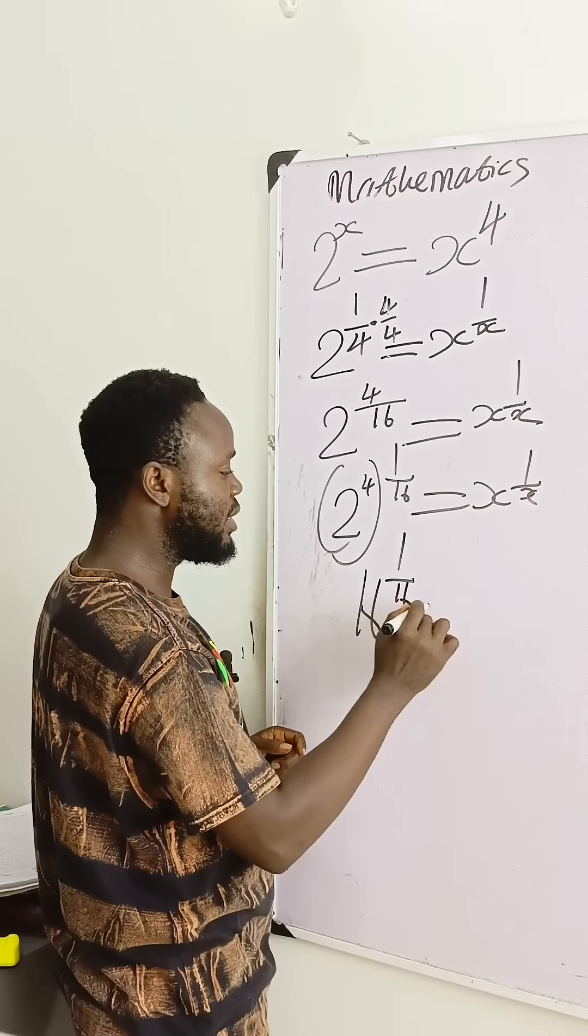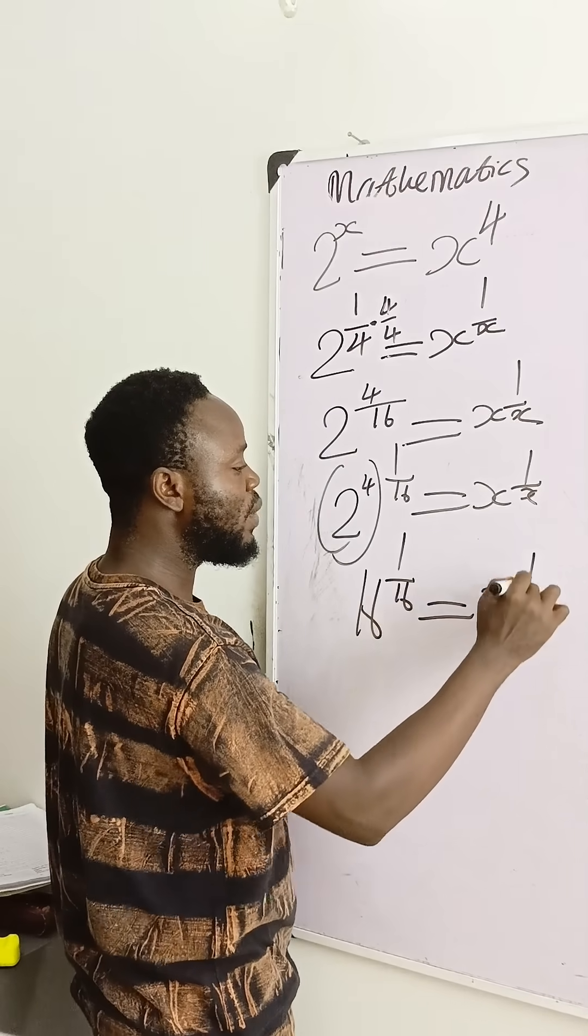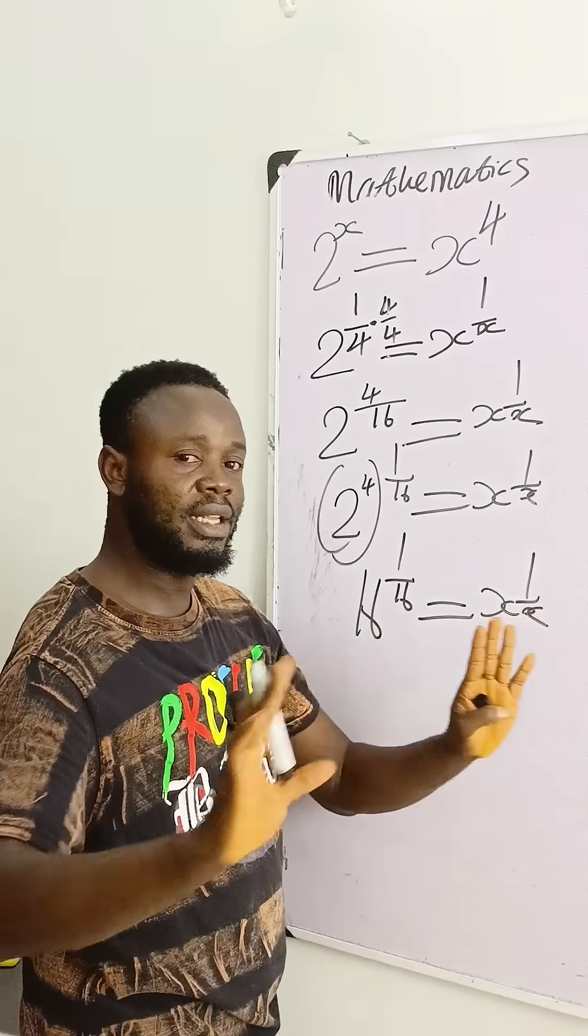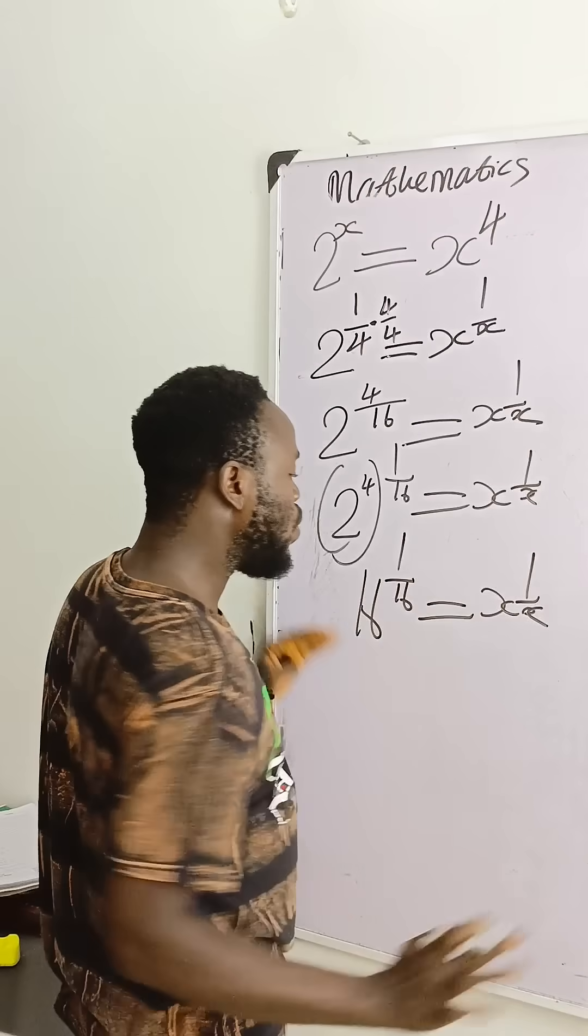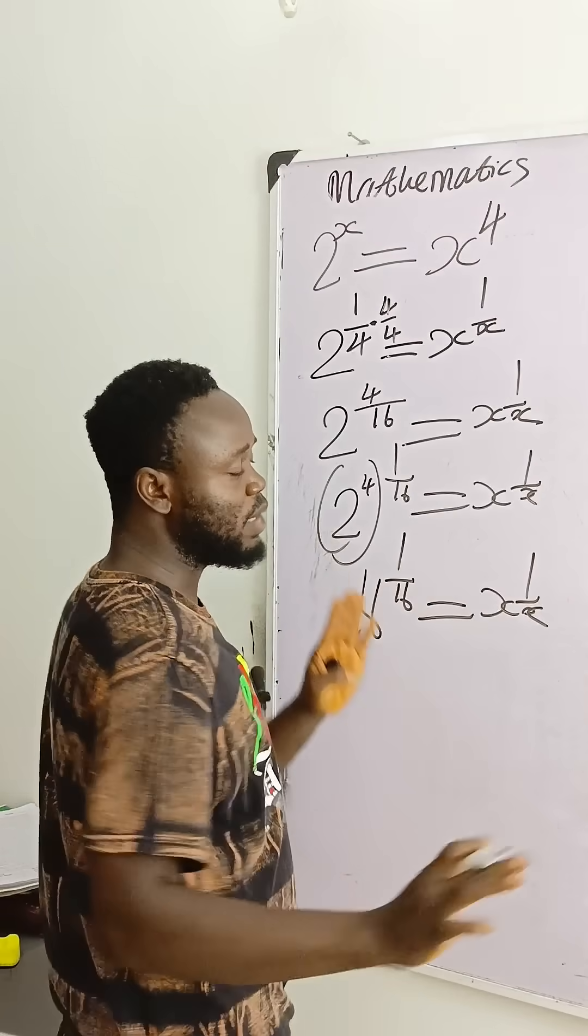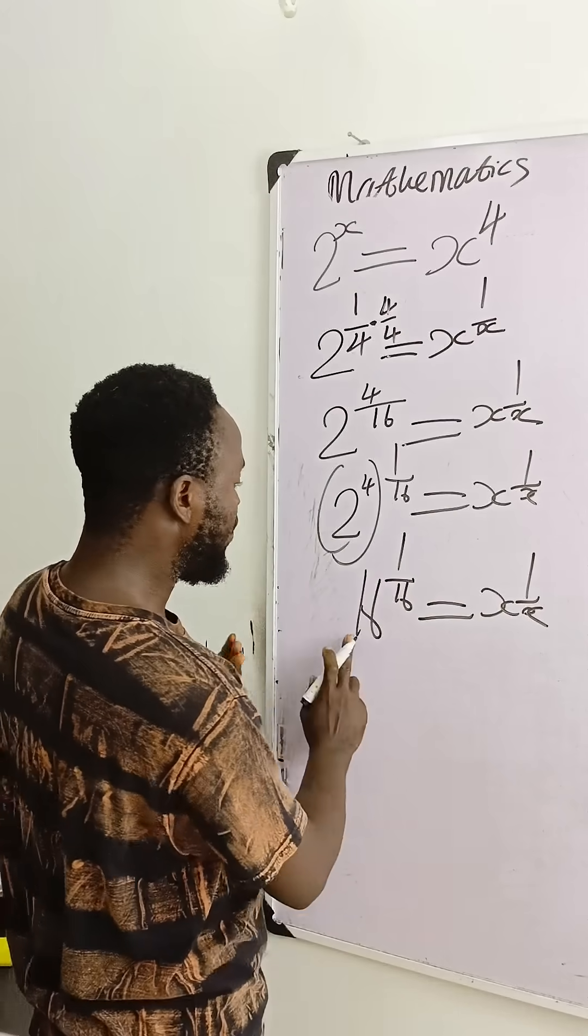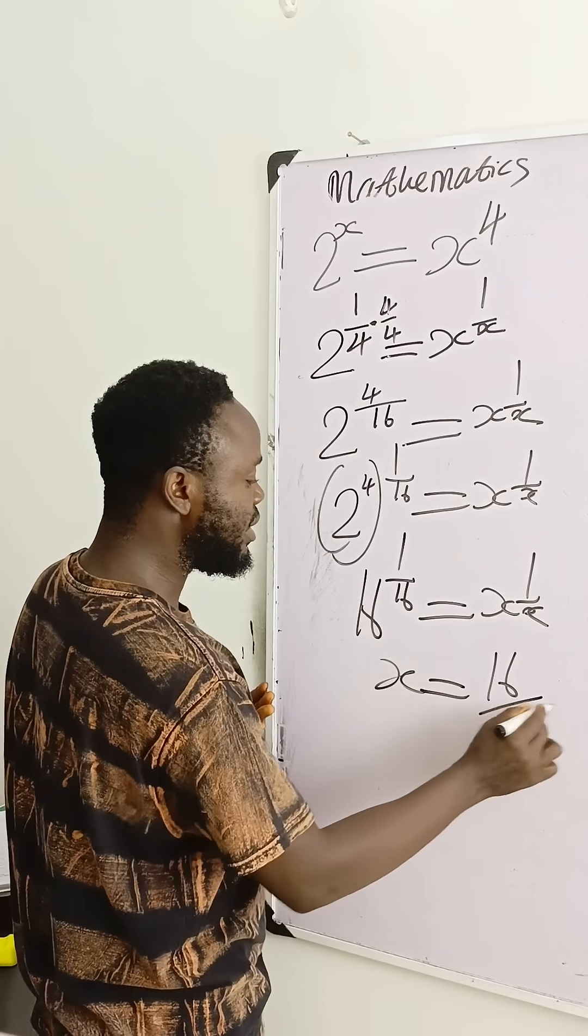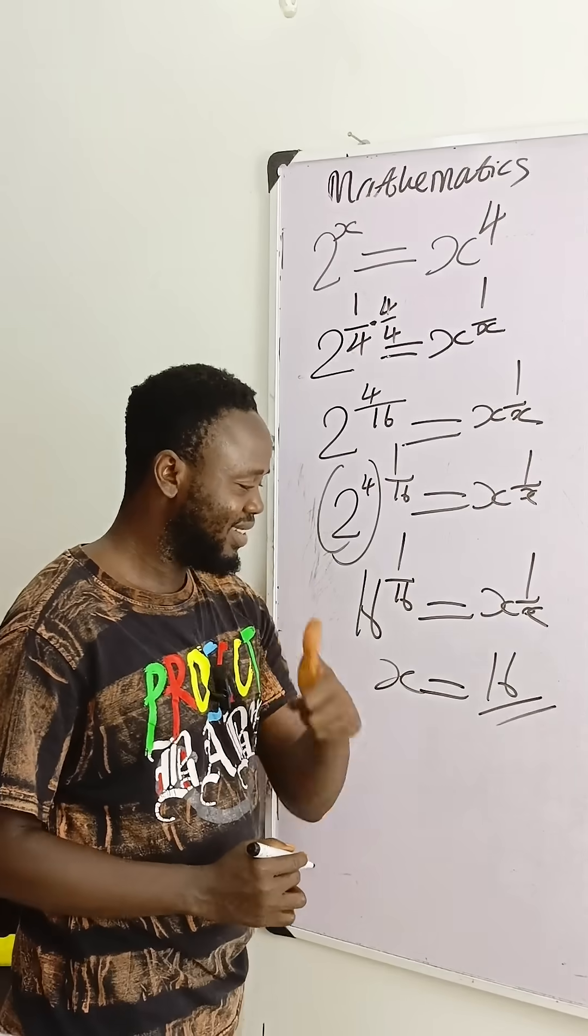Raised to power 1 over 16 is equal to x raised to power 1 over x. You can see that these and these are exactly similar, and therefore they are equal. We can now compare the exponents or the bases. If we compare the bases, we now see that x is equal to what? 16, as our final answer. Thank you.